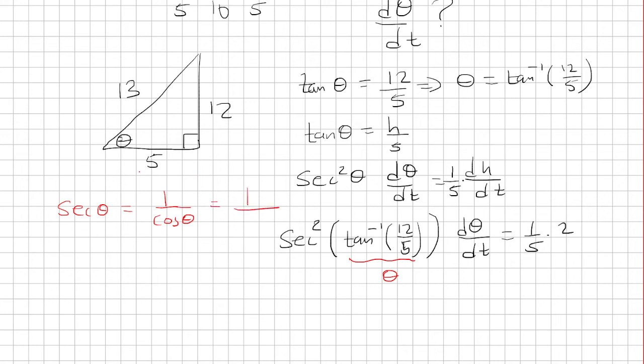Which is 1 over adjacent over hypotenuse. And that's just 13 over 5. So you're just finding the reciprocal.